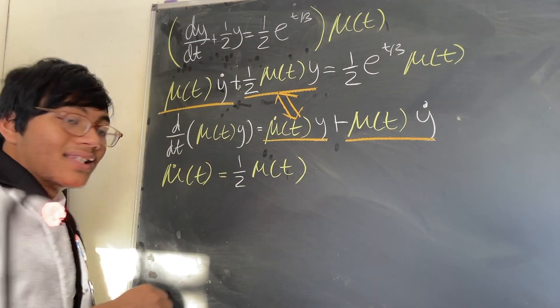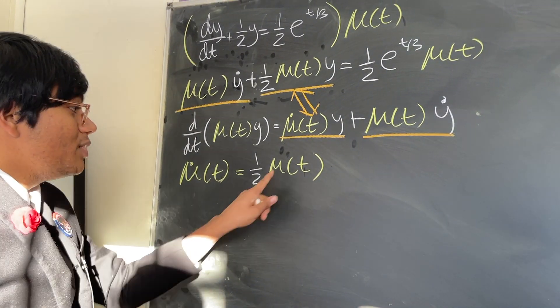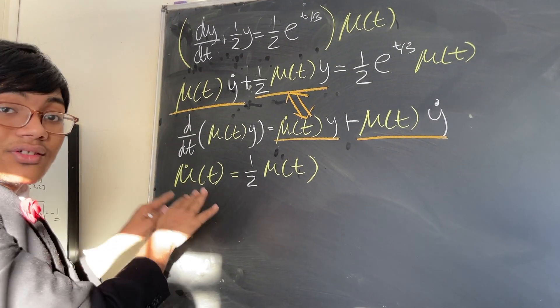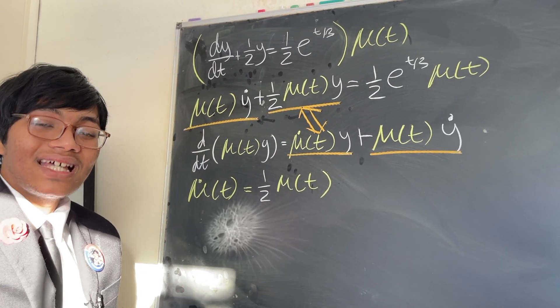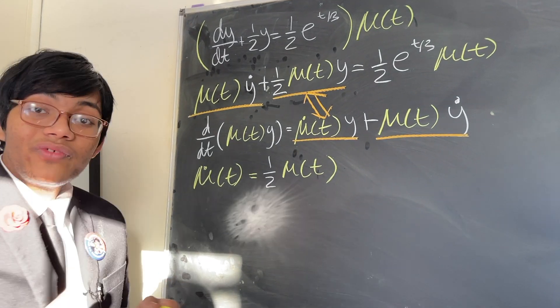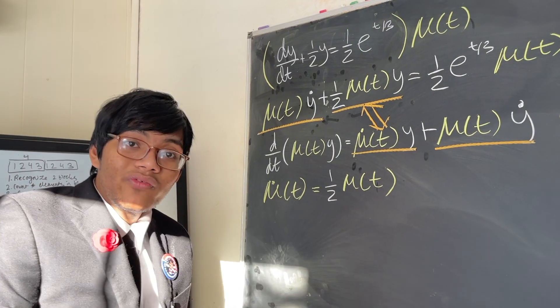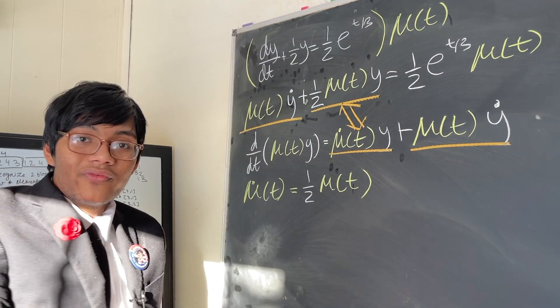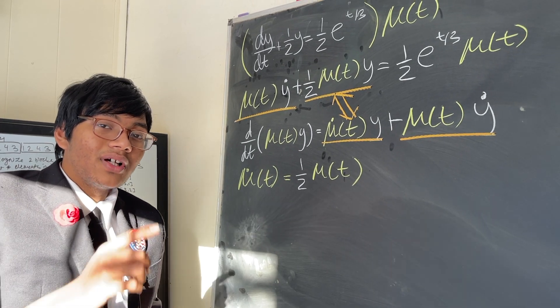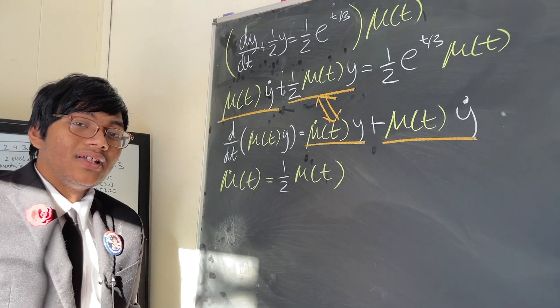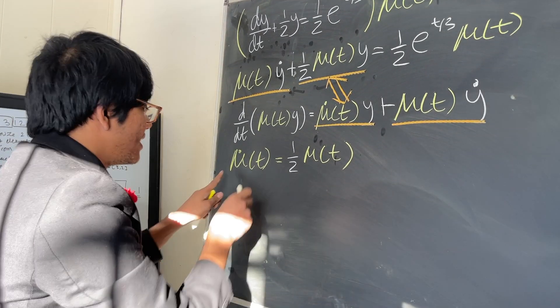So what is this saying? This equation is saying there is some function mu of t, and if I take its derivative, it's going to give me back half of that function. What does that sound like? What very famous function did you learn in calculus one that if you take its derivative you get the original function times a constant? Do you know the function? Pause the video and try it out. If you don't remember, well, keep watching. I'm going to tell you the answer. The answer is e to the t, right? It's the exponential function.